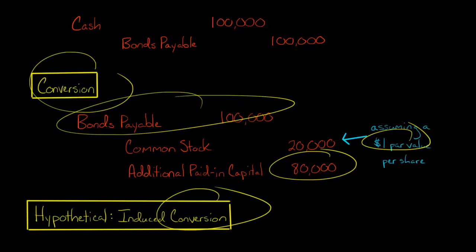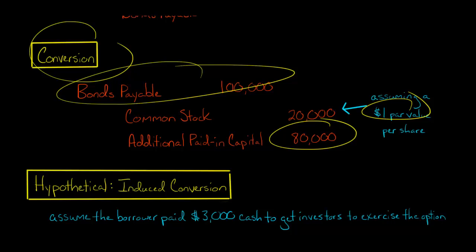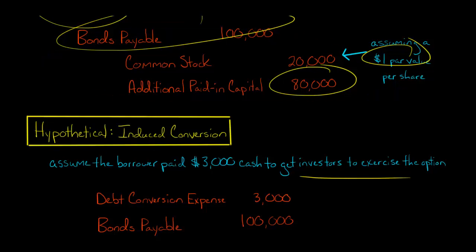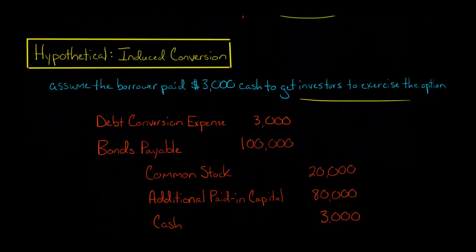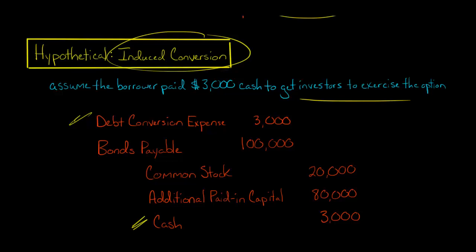Sometimes if the company that borrowed the money really wants the investors to convert, this is called an induced conversion. To induce a conversion, the borrower will offer something called a sweetener. For example, they might say they really want you to exercise this option and become an equity holder, so they'll pay you $3,000 cash as a kicker. The journal entry is the same as before — debit bonds payable, credit common stock and paid-in capital — but now you also debit debt conversion expense and credit cash for $3,000.